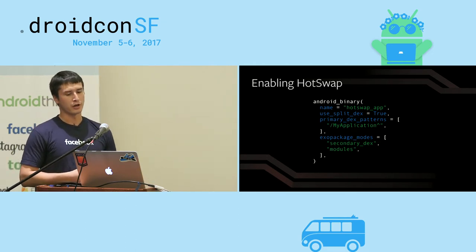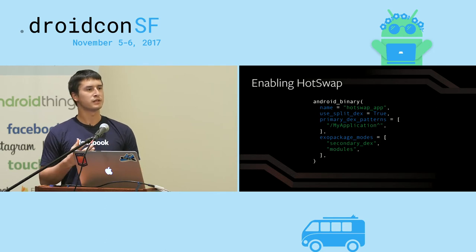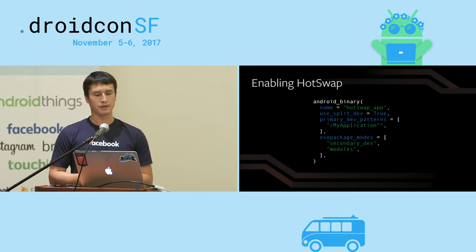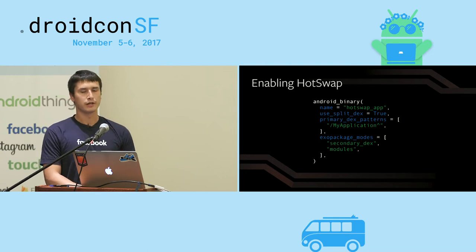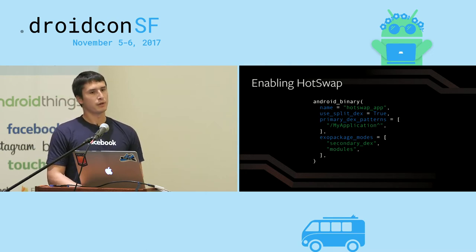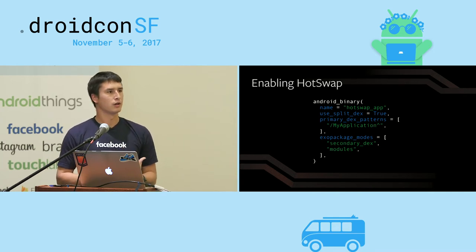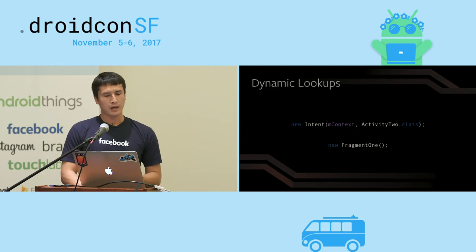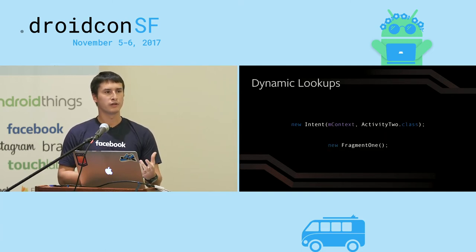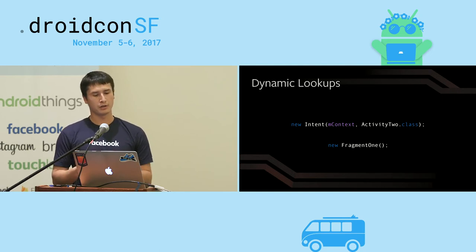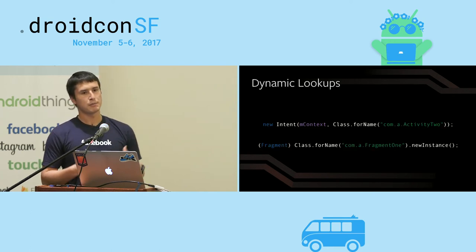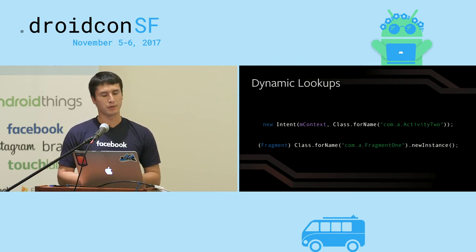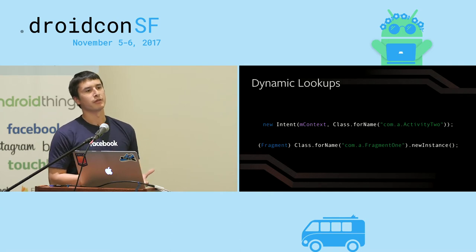Let's talk about how you turn it on. The way you enable it is you add a new exopackage mode — remember exopackage was that incremental install. You flip this on by turning on exopackage modes and adding modules. The implementation relies on modularizing your app. You also change the way that you invoke these modules. Modularizing your code usually means pulling out explicit references and replacing them with dynamic lookups. Here I've taken the typical code for creating an intent or instantiating a fragment and I'm doing it dynamically rather than baking in that reference at compile time.